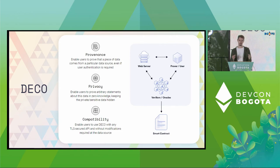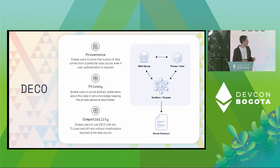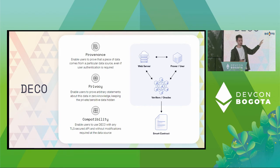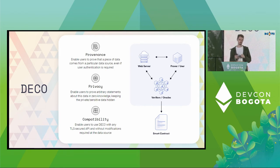I'm briefly going to describe how Deco works and what properties it affords — first in the abstract, and then by going through an example. We have three off-chain parties: a web server, a prover or user, and a bunch of verifiers or oracles.